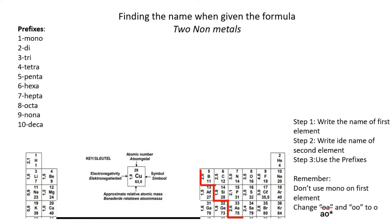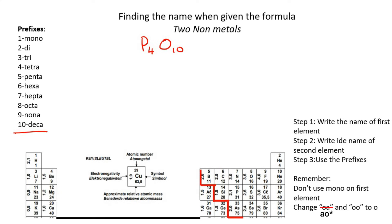Our next example is P₄O₁₀. Some teachers only stop at smaller numbers, but let's just try this one.